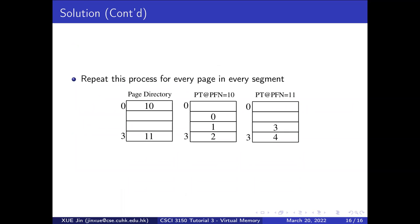For the second page of the code segment, we fill in physical frame number 1 into the corresponding entry. We do a similar thing for the data segment, filling in the appropriate entries. For the stack segment, because it is at the highest location in the virtual address space, it corresponds to entries in the last page table. We fill in the physical frame numbers for the stack segment pages to complete those mappings. After repeating this process for every page in every segment, the virtual address mapping is completed.